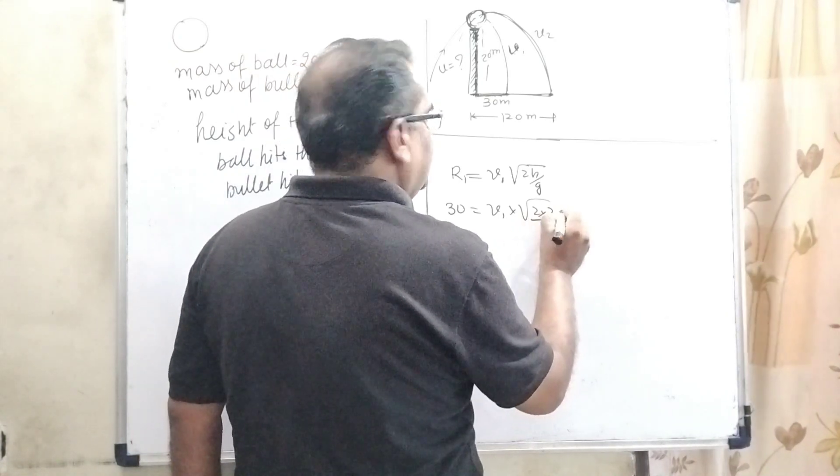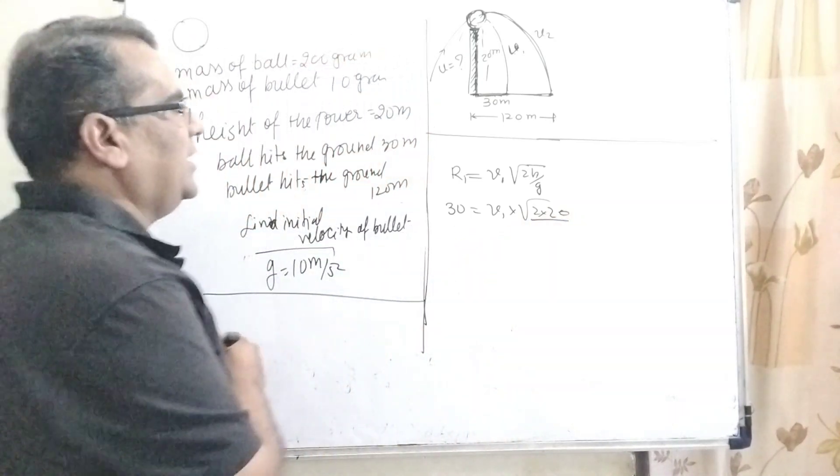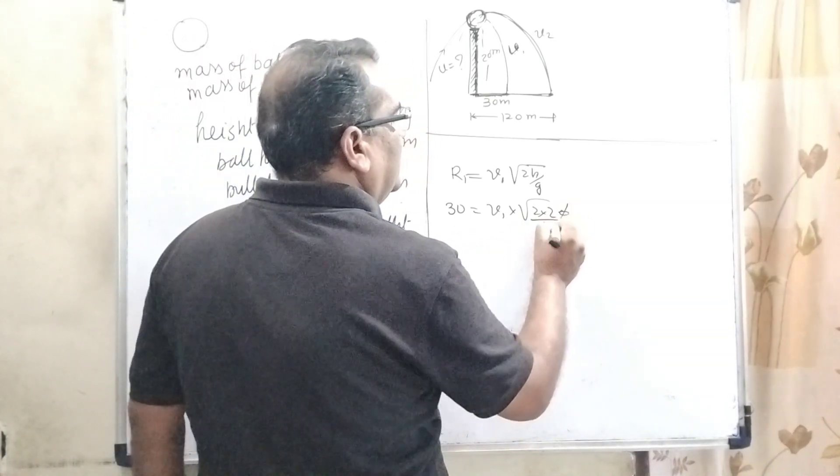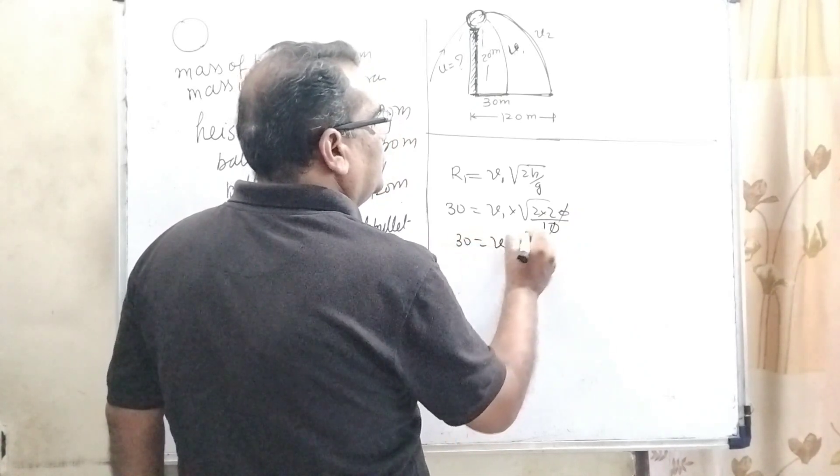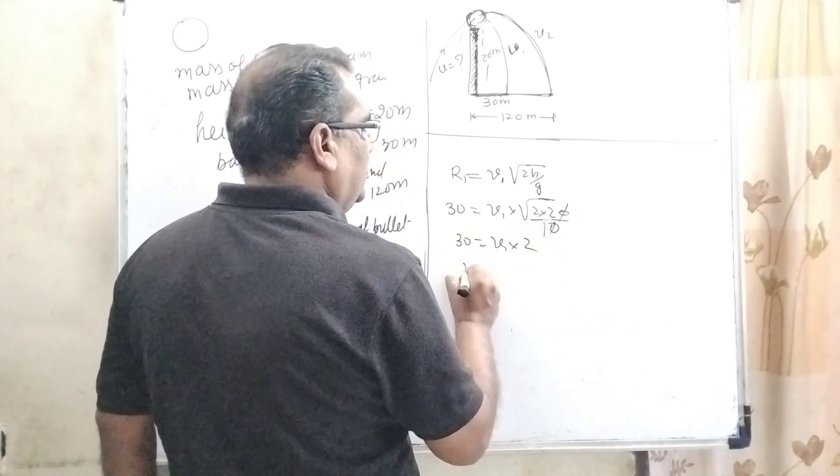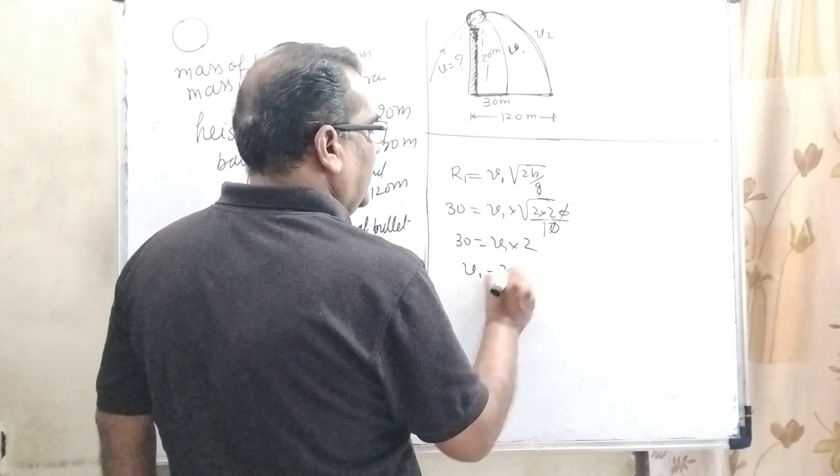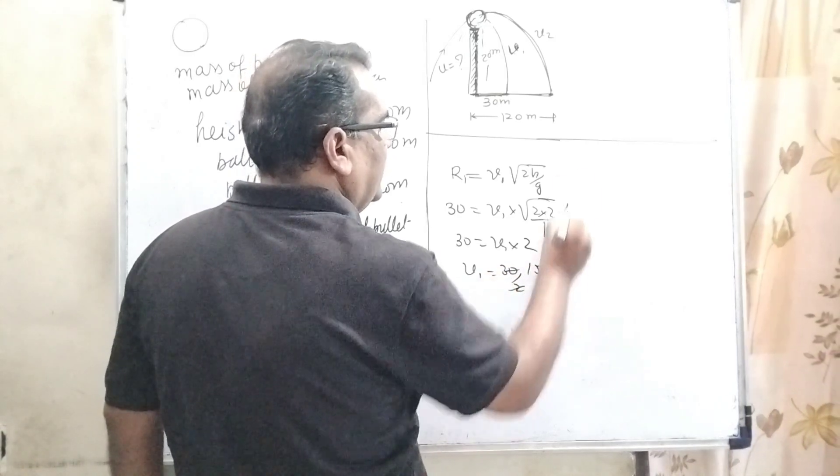Here, R1 is given, that is 30. V1 we have to find out. H is height of tower, that is 20. And G is given in the question as 10 meter per second square. So 30 is equal to V1, square root of 2 times 4, and root 4 is 2. Then V1 equal to 30 by 2, that is 15 meter per second.